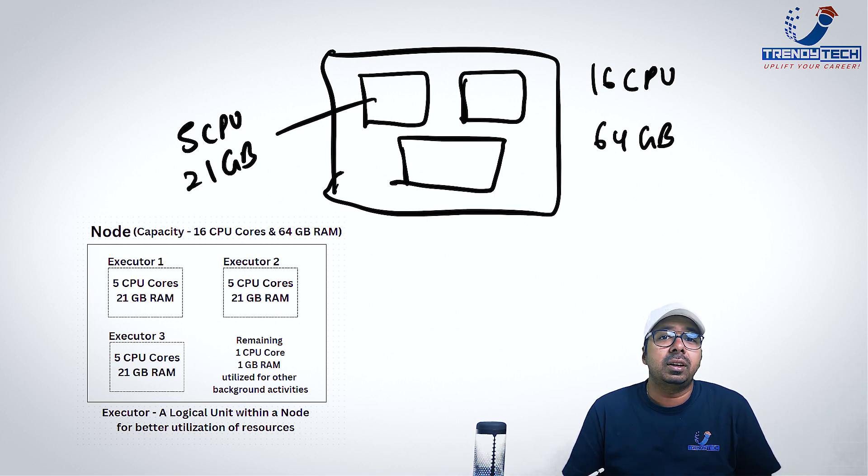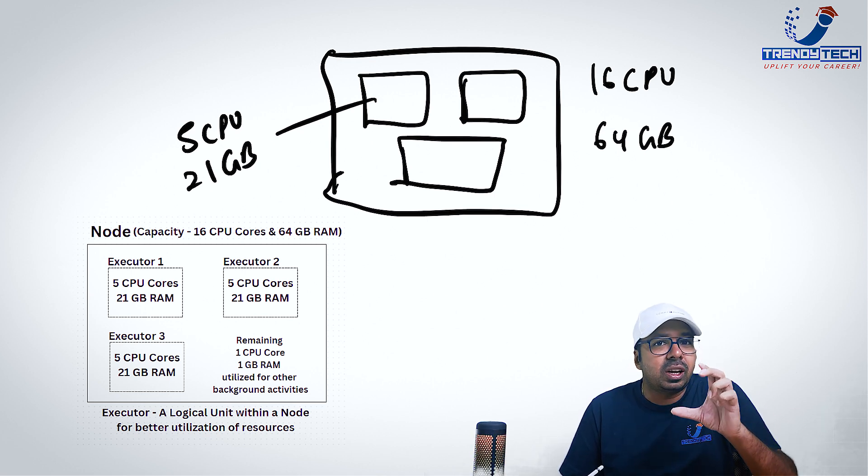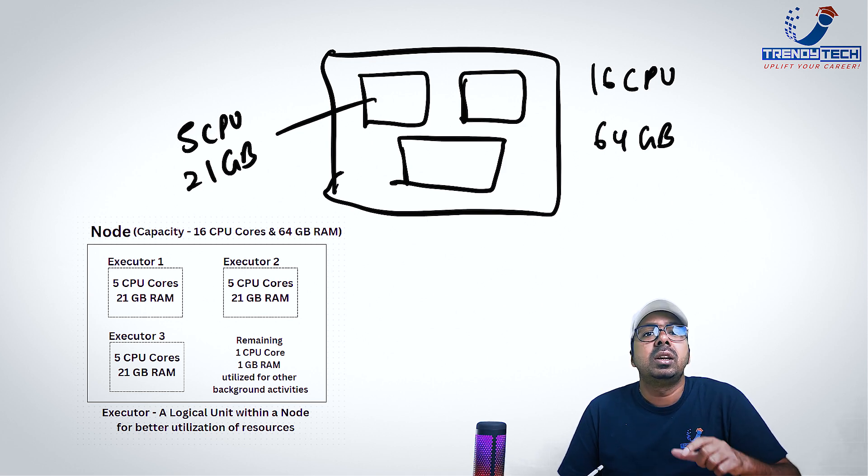So that's how we have divided the resources within one machine into three parts. And when we want, we can say that I want two executors of this much size and so on. So executor is like a logical unit within each node. This is for better utilization of resources. So you have understood what is an executor.